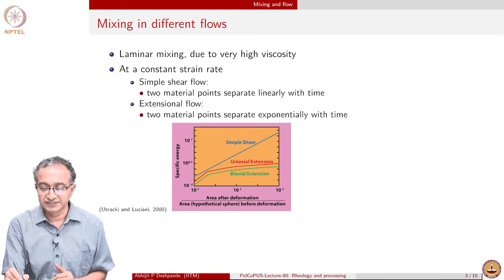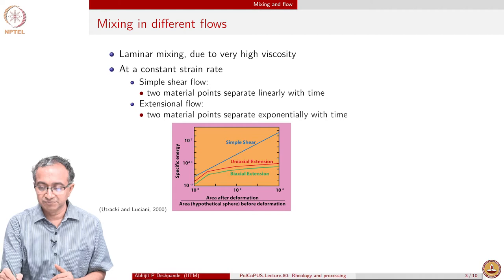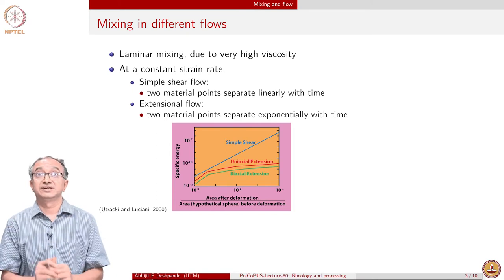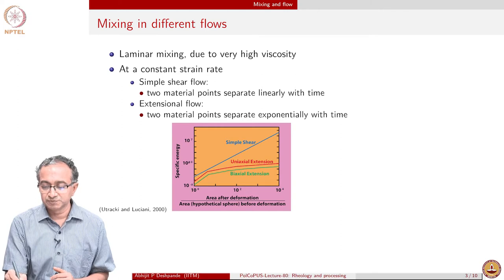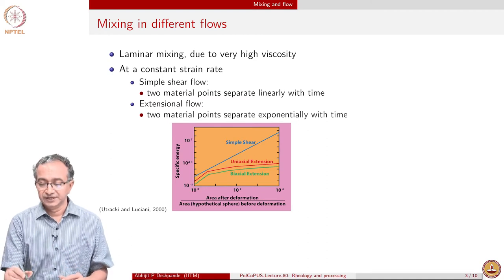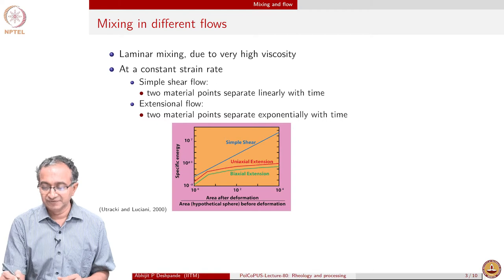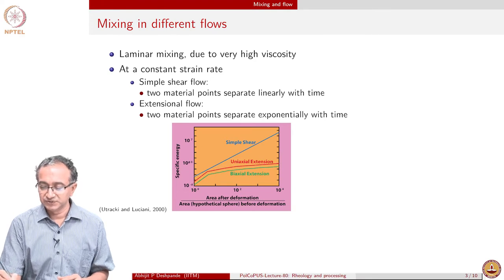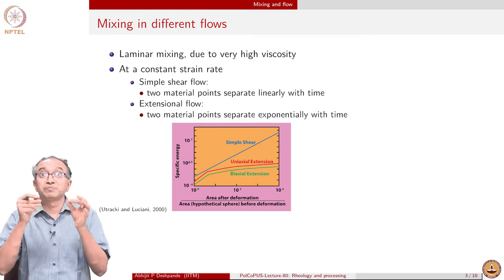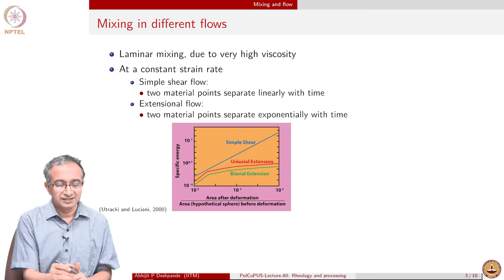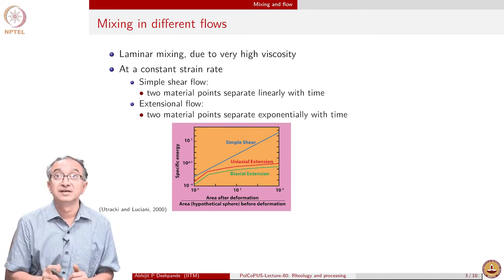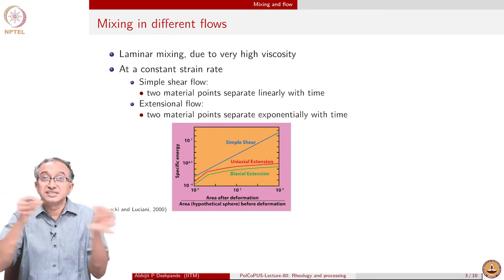In extensional flow, the material is stretched so it flows in one direction but contracts in the other. In this case the separation is exponential in time, because Vx is proportional to a strain rate constant times the position of the material. Since velocity is dx/dt, it is proportional to x, giving dx/x = constant × dt — an exponential. The position of material particles changes exponentially, so the distance between two material points increases rapidly.